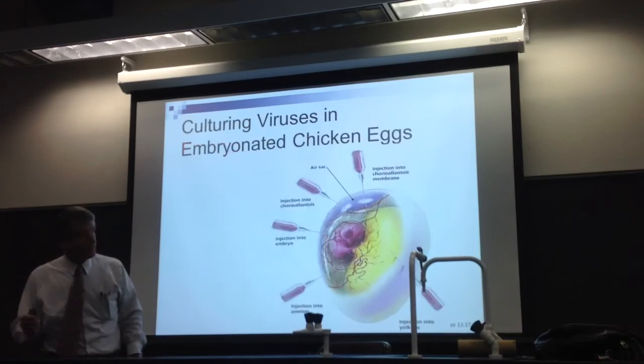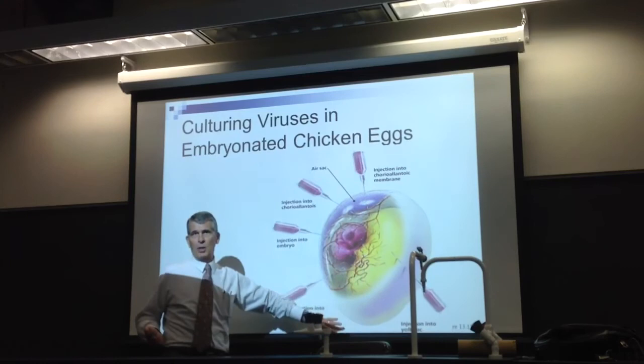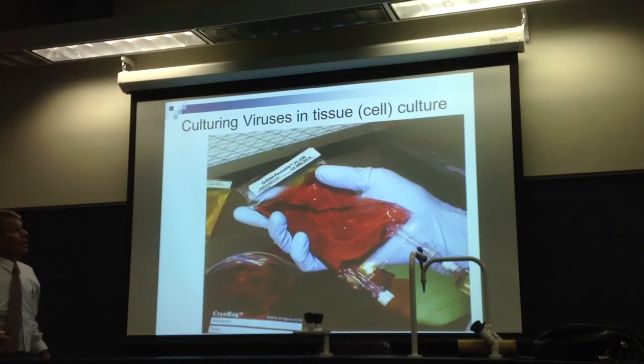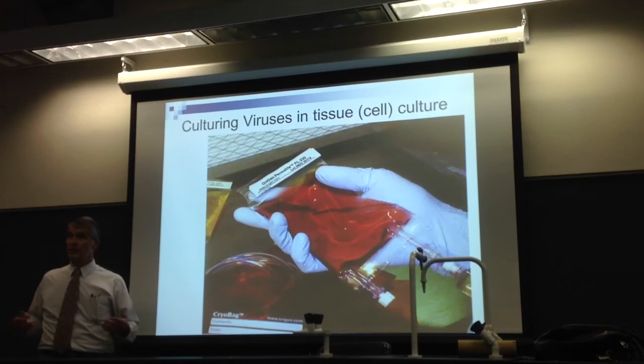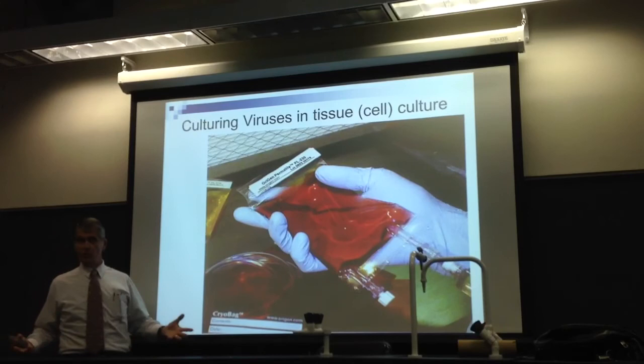We can culture them in chicken eggs — simply because it's sterile, cheap, easy, and it's living cells. We can make cell cultures where we take tissues — skin, organs, etc. — and treat those with enzymes that break the cells in our tissues into individual cells.